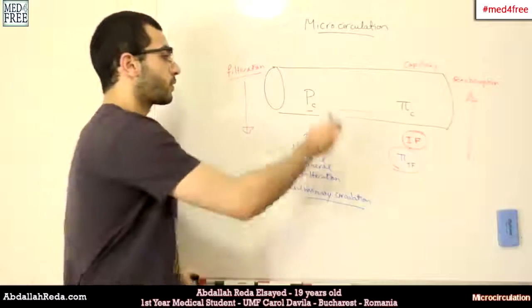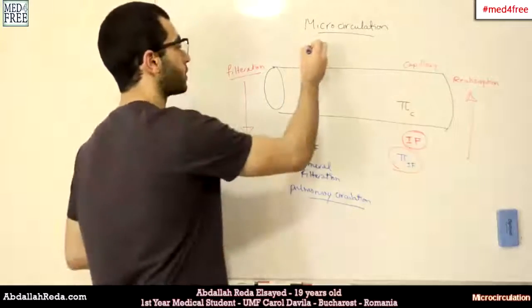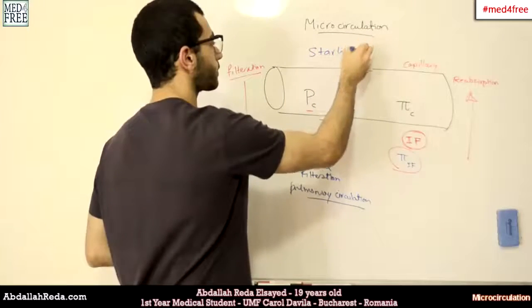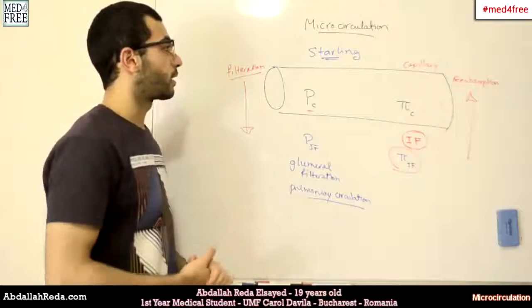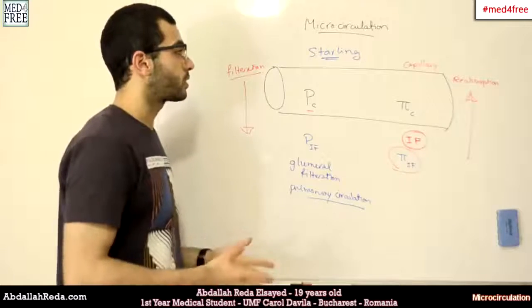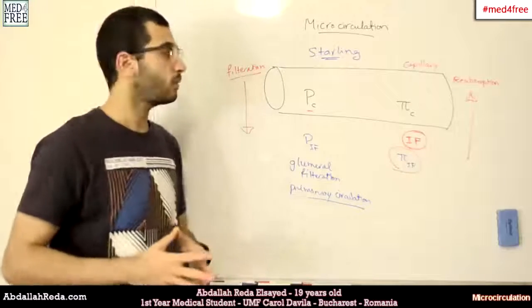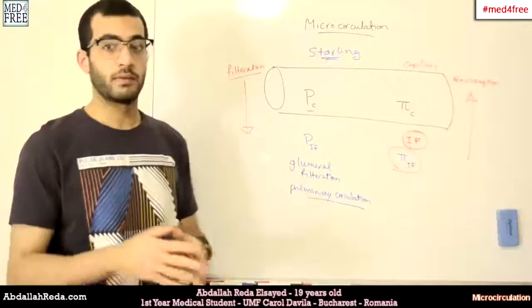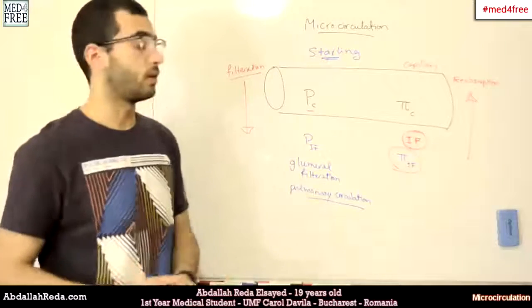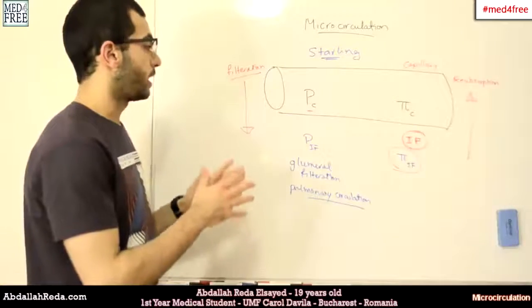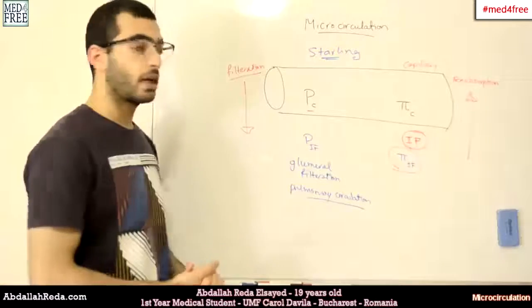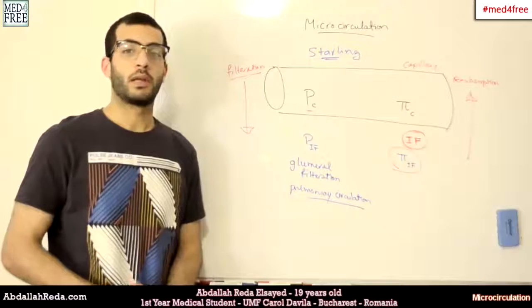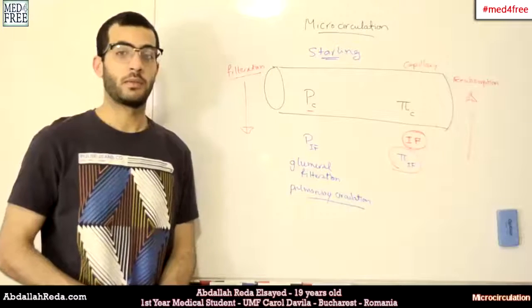These forces, collectively, are called Starling forces. They are used in the measurement of microcirculation with positive and negative values, and they are put into an equation that we will discuss next time. Thank you for watching, and see you.